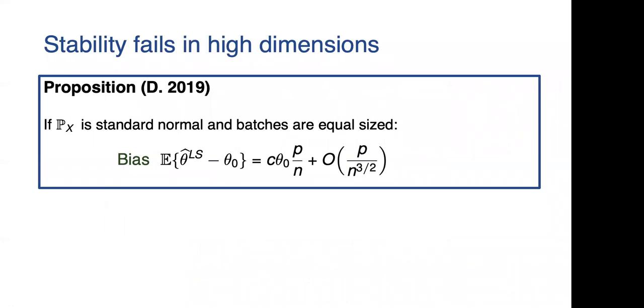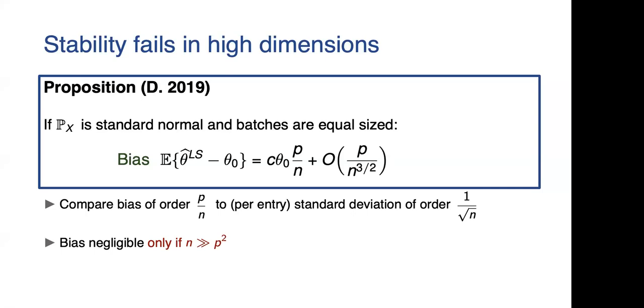How this connects to the topic of our workshop is that in some sense, the high dimensionality of the data set is related to this lack of stability. You can prove that for the least squares estimate, you can take a simple counter example where px is standard normal. Then the bias of the least square estimate is essentially proportional to the original theta zero, with the proportionality constant that depends on p over n. When will the bias be negligible? The bias is negligible if p over n is smaller than the standard deviation, which is of order one over square root of n. And if you do the calculation, this happens only if n is much bigger than p squared.